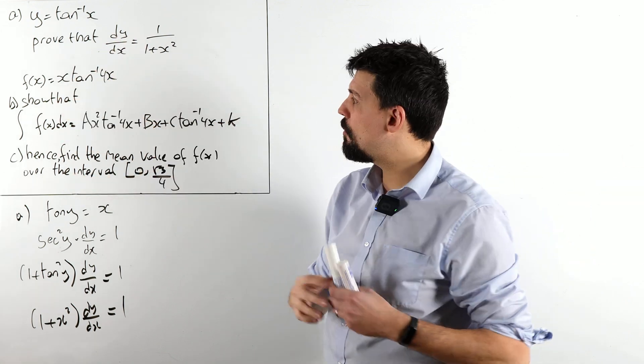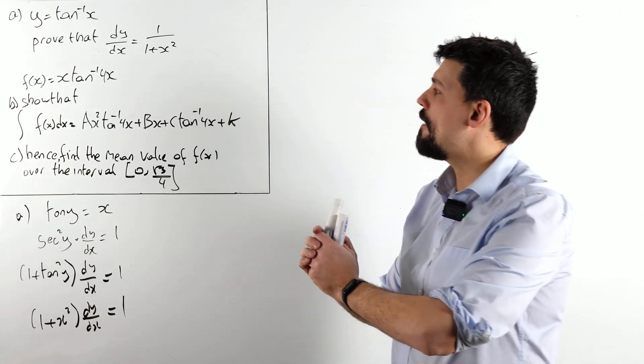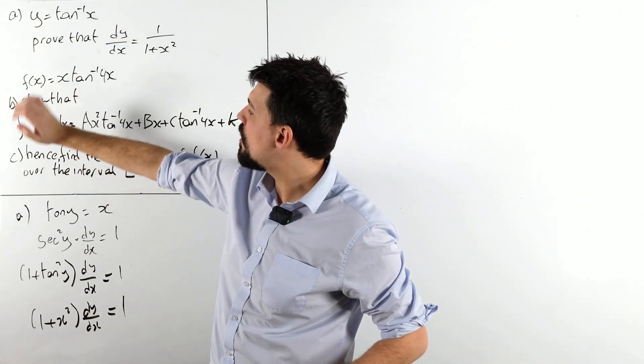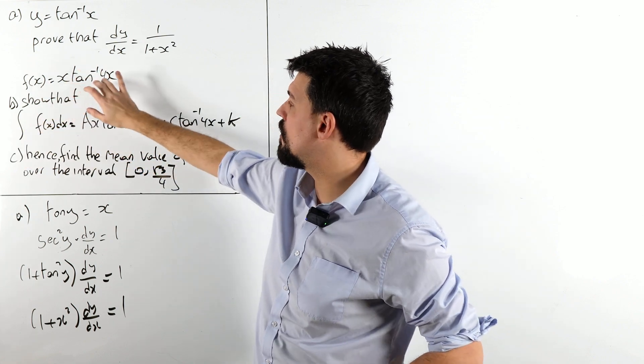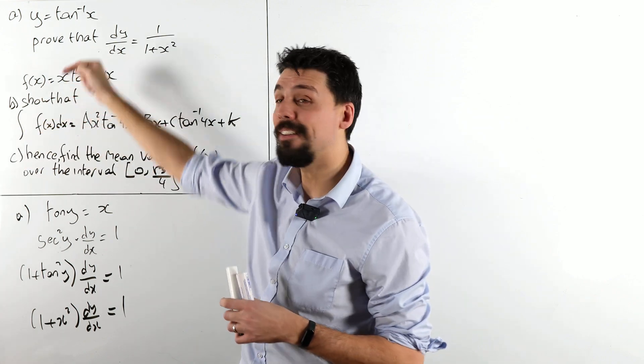All right, don't get comfortable, we've got more to come. What's our next bit? We've got a new function, x tan minus 1 of 4x. Look at that, linked to part A.